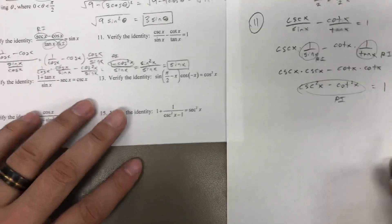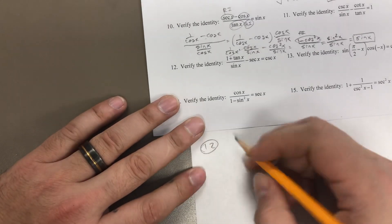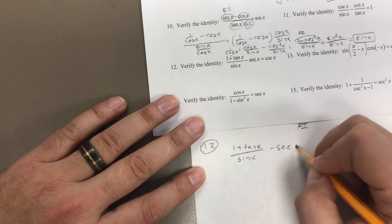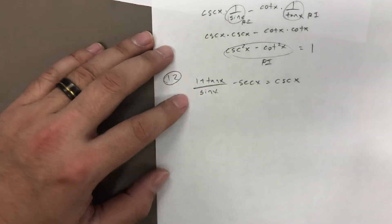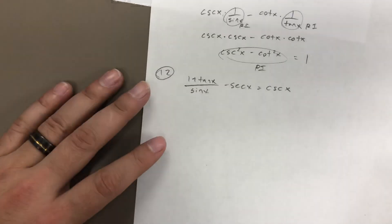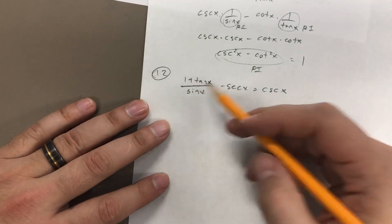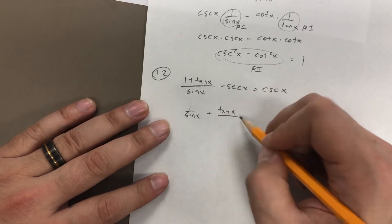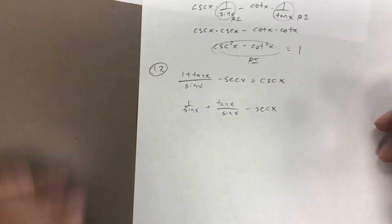Let's move on to number 12, and do it on this same piece of paper. So number 12: 1 plus tangent of x over sine of x, minus secant of x, equals cosecant of x. This problem is pretty close to the group quiz, if I remember correctly. You can split the fraction apart: 1 over sine of x plus tangent of x over sine of x, minus secant of x. Some kids did this on their quiz — I thought it was a pretty good idea.